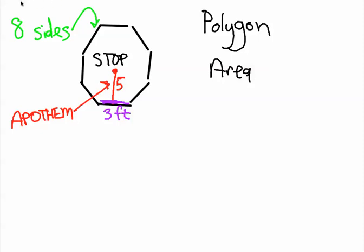The formula for finding the area of a polygon is, we'll just say the area of a polygon with a little P to represent polygon, equals half of the apothem times the perimeter.